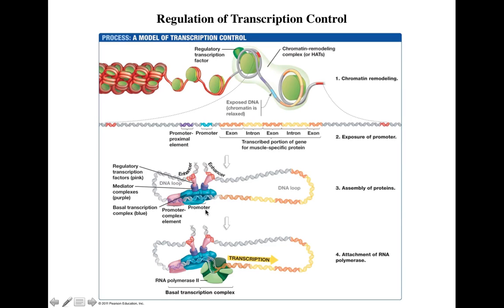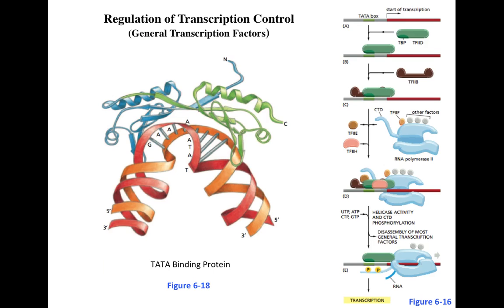After assembly of general transcription factors, gene-specific transcription factors binding the promoter proximal element, activators bound to enhancer regions, and mediator proteins, the complex is complete. The last and most important protein to be recruited is RNA polymerase 2, which is attached to the DNA and initiates transcription.